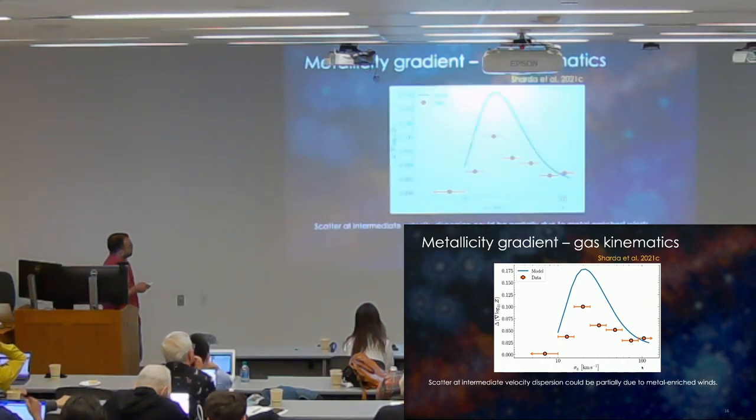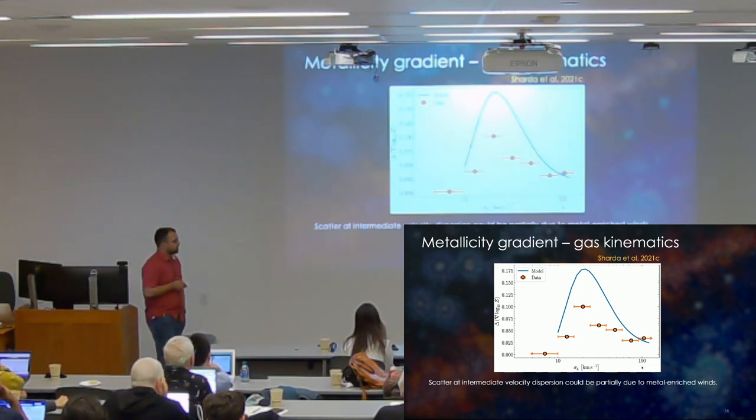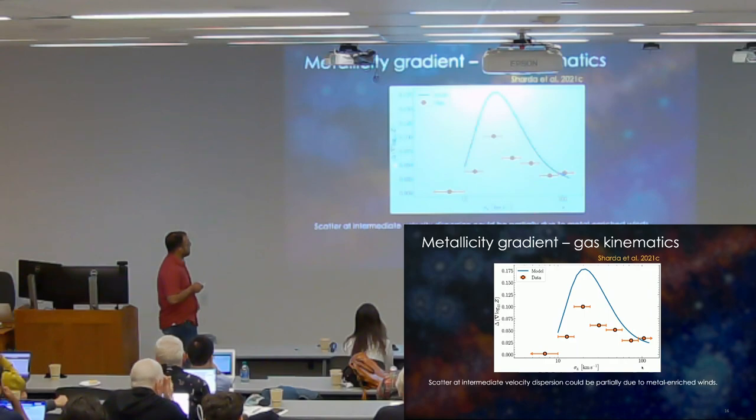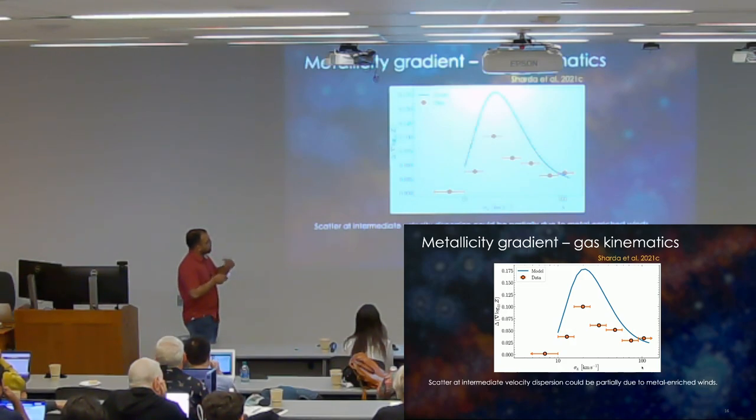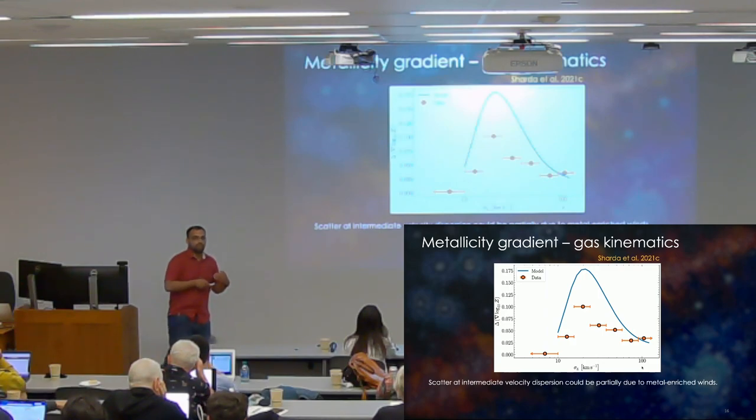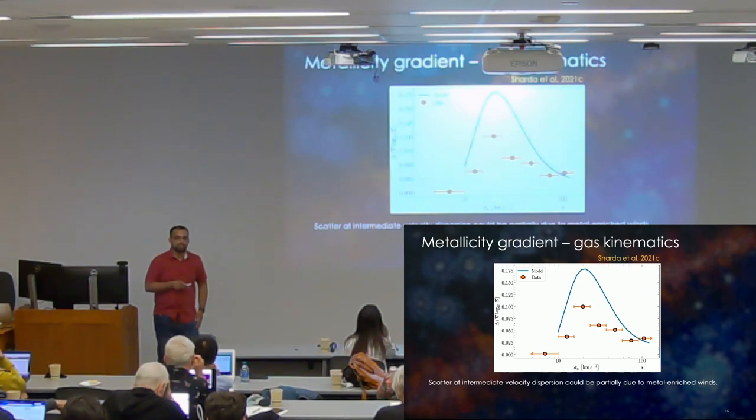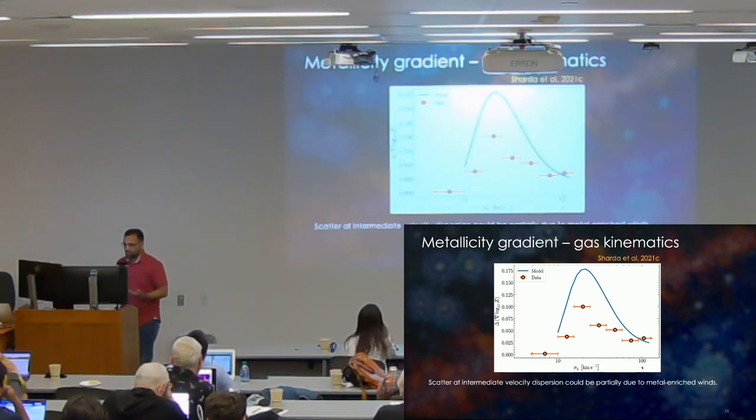Another thing we could do, for example, is just look at the scatter function for the data and the models. So again, the x-axis is the same. The y-axis here is the scatter in the data and the scatter in the models. What matters more here is not the absolute magnitude of the scatter function, but the shape. And the fact that the model shapes sort of closely align with what the data tells us right now means that, again, metal-enriched winds are doing something important even at these redshifts, which is sort of expected given that these galaxies are forming stars quite rigorously.